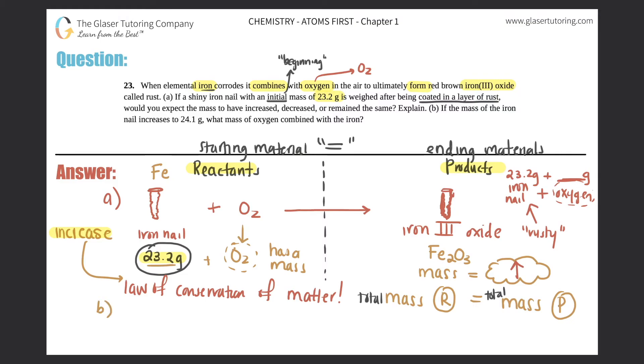Now part B: if the mass of the iron nail increases to 24.1 grams, what mass of oxygen combined with the iron? So I'm going to say iron nail plus oxygen has to equal, because remember the two sides, because of the law of conservation of matter, they have to equal each other. It's going to equal the rusty nail.